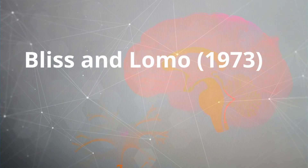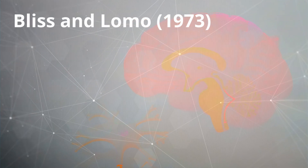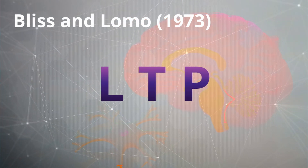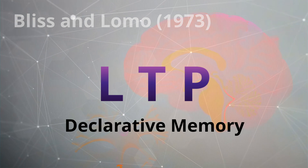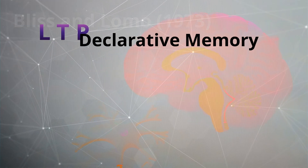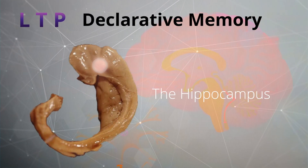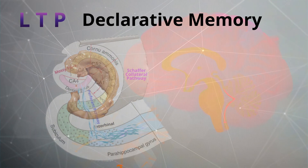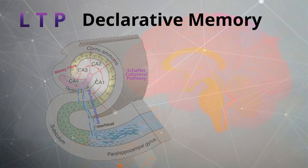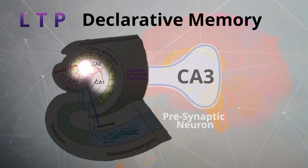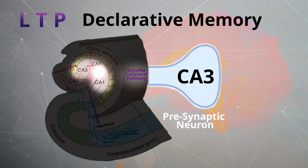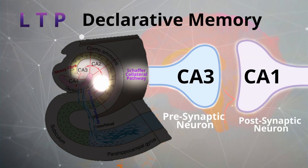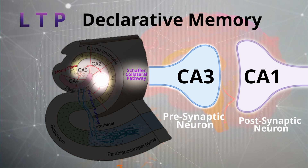Bliss and Lomo were the first to discover LTP and they found it to be essential for the formation of declarative memory. The most studied site where the mechanism of LTP occurs is within the synapses between the presynaptic CA3 Schaffer collateral neurons and the post-synaptic CA1 region of the hippocampus.